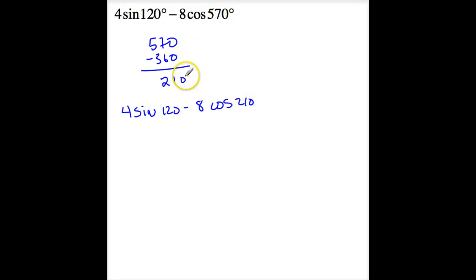Now, these are not the same angle, but the cosines will be the same. So 120 degrees, that's quadrant 2, and the reference angle is 60 degrees. 210 is quadrant 3, and its reference angle is 30 degrees. So this becomes 4 times the sine of 60 is square root of 3 over 2, minus 8 times the cosine of 30, but it's quadrant 3, so it's going to be negative square root of 3 over 2, or I get 6 square root of 3.